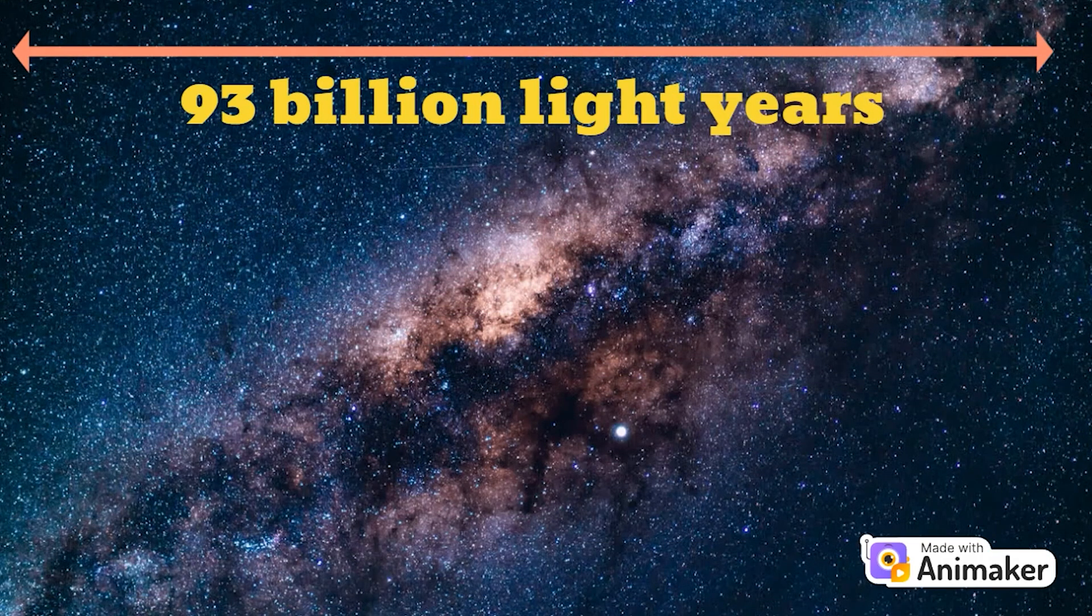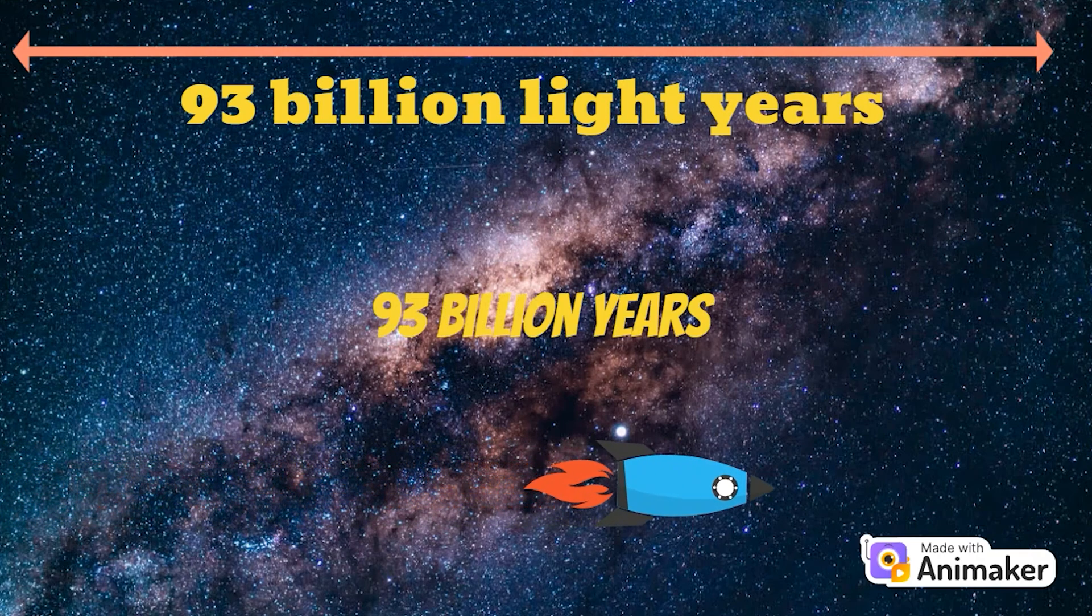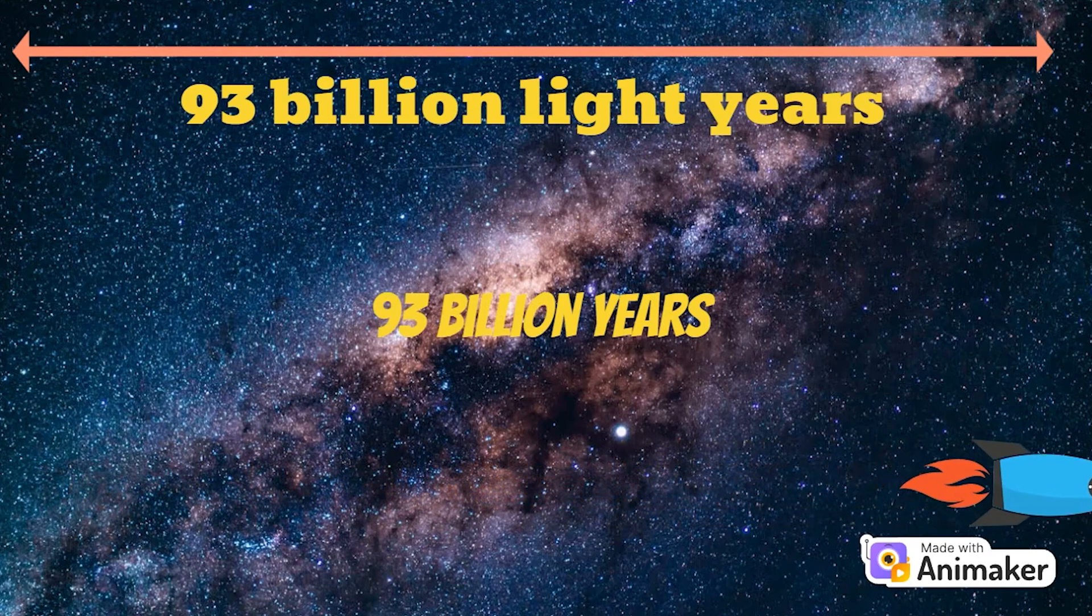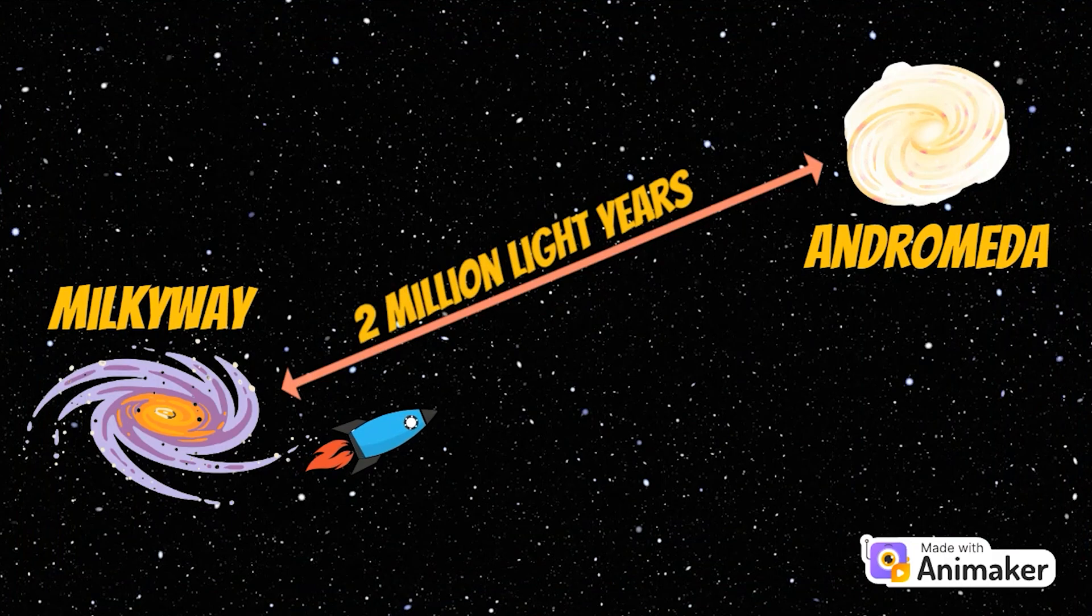But the universe has reached 93 billion light years, and this means that if one day man can invent a machine that can move at the speed of light, it still takes 93 billion years to reach the edge of the visible universe. Even at this speed, it will take us 2 million years to reach the nearest galaxy, Andromeda, so traveling at the speed of light is not rational at all.